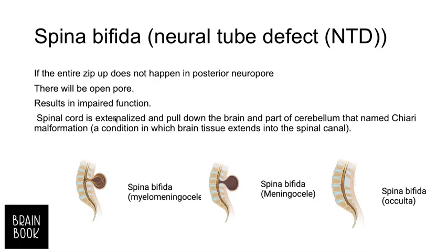These three types of deficiency are due to the posterior neuropore not closing perfectly. If the entire zipper-up does not happen in the posterior neuropore, the spinal cord is externalized, causing impaired function. Additionally, in the inferior part of the spinal cord, parts of the brain, brainstem, and cerebellum can be affected — their tissue extends into the spinal canal. This malformation is called Chiari malformation and is evident in people who have spina bifida.